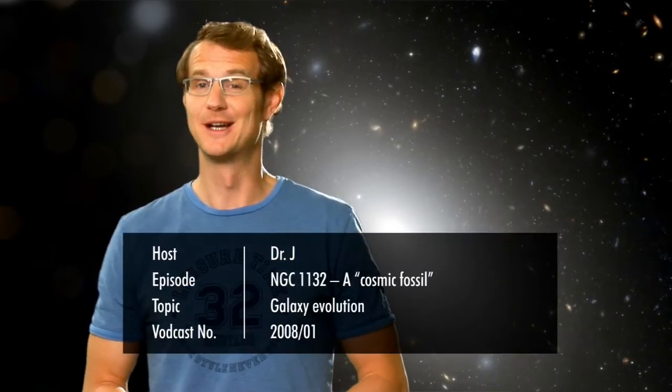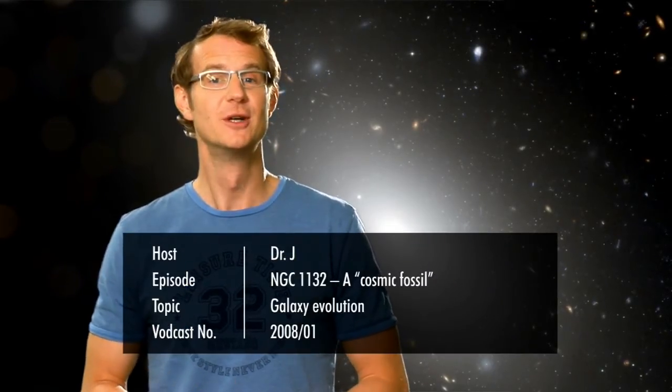Welcome to the Hubblecast. In this episode, we'll take a close look at the latest image from the Hubble Space Telescope. It shows the giant elliptical galaxy NGC 1132. Now you may ask, what's so special about this fuzzy, seemingly bland object? Well, the interesting thing about it is not so much what it looks like today, but rather what happened in its past. So let's try to trace its history by taking a very close look at its present-day features.